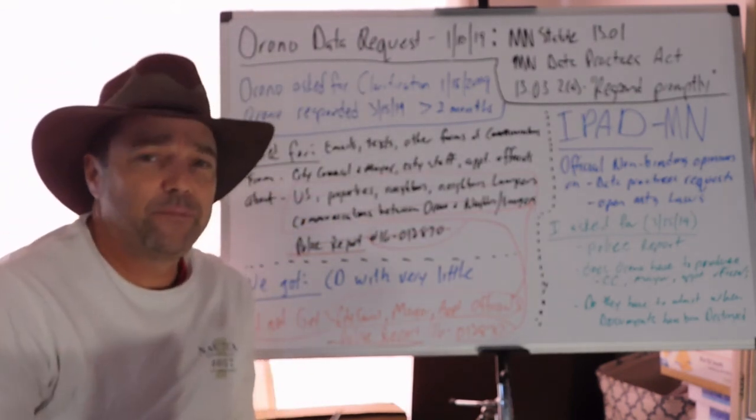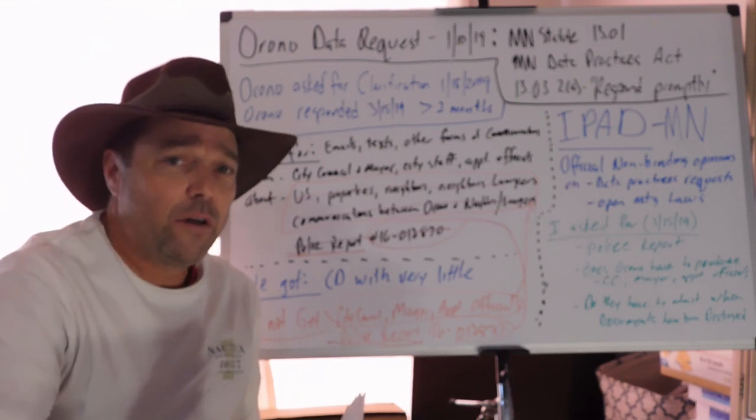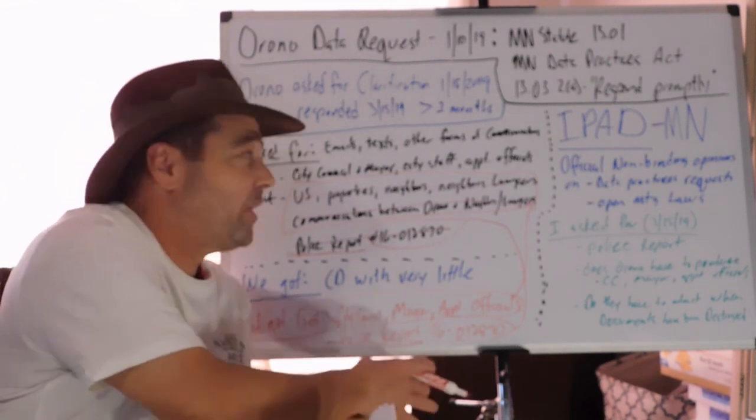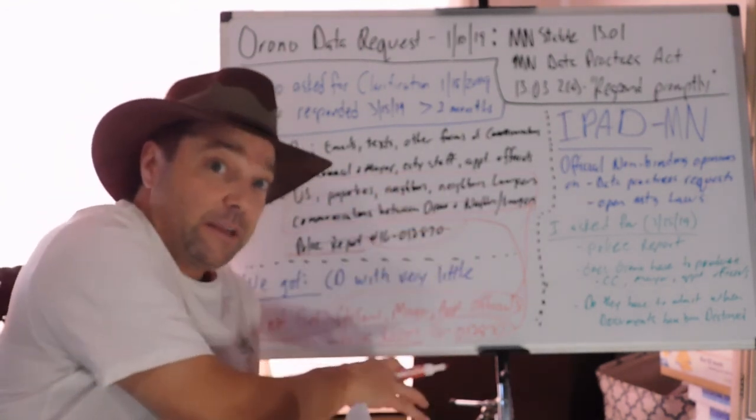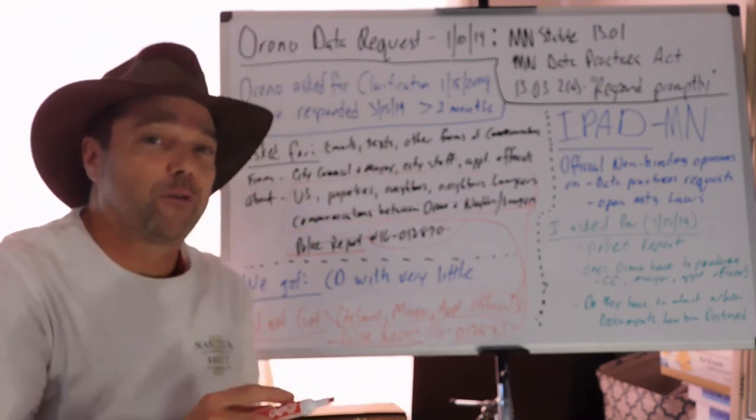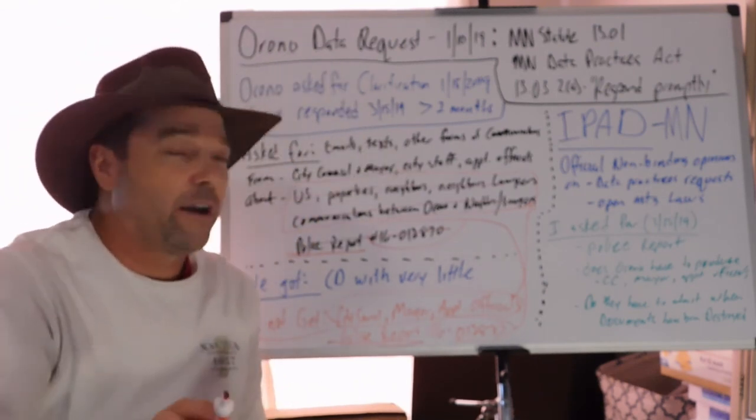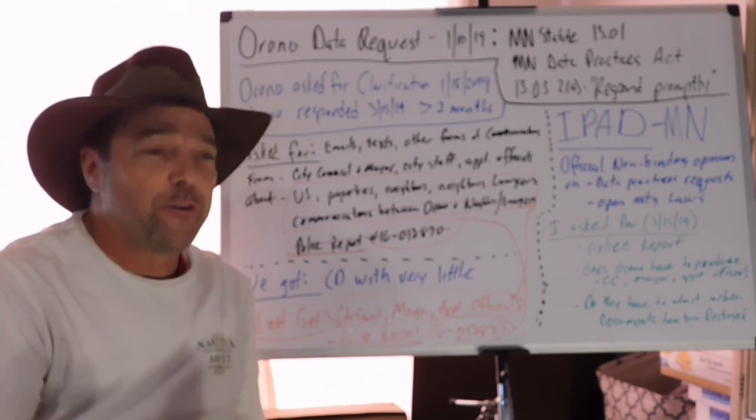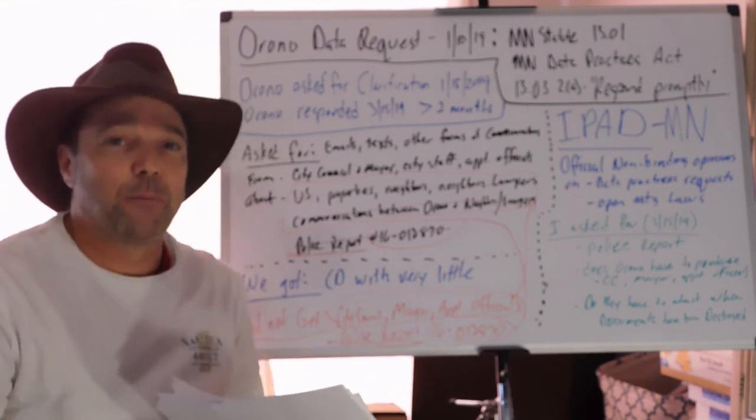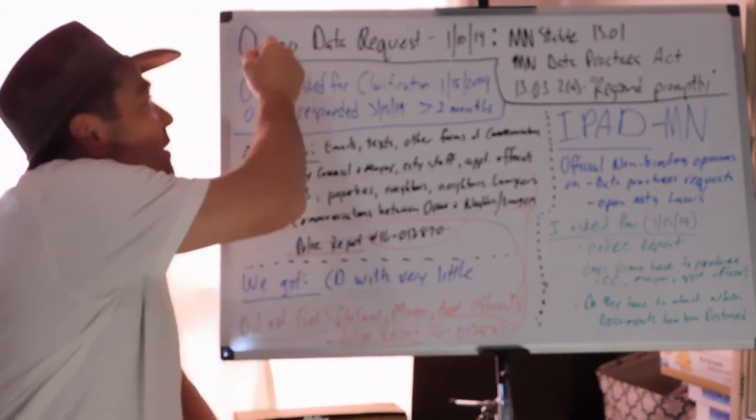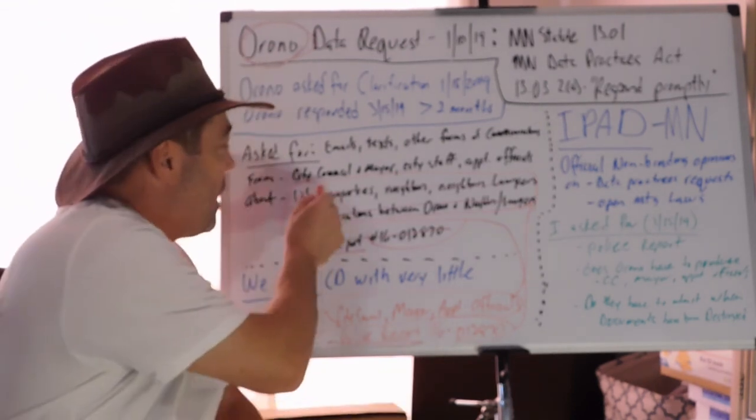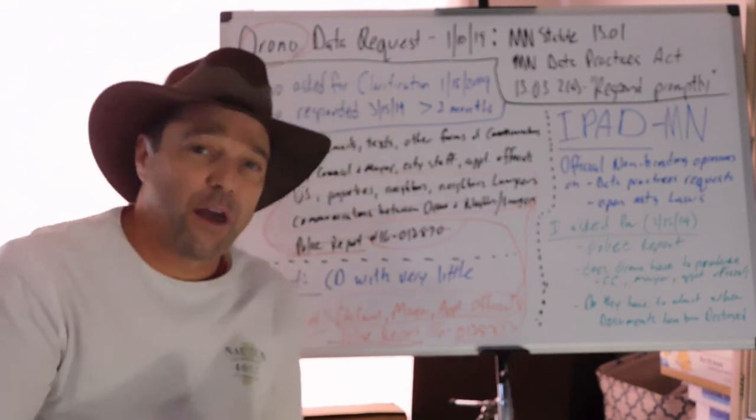The city also refuses to hand over the city council, mayor, appointed officials' information about us, properties, our neighbors, our neighbors' lawyers, go green energy, all of that stuff—zip, nada. What's the use of statute? To me the criminals are the ones disseminating the evidence, and they're refusing to give it up because then they would be incriminated and they don't want to be held accountable. I like watching Dr. Phil. If there's one thing Dr. Phil says: people who have nothing to hide hide nothing. Well, Orono, why are you hiding all of this?